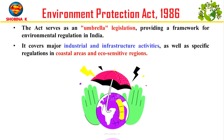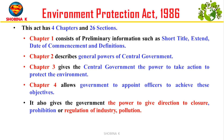It covers everything from big industries to coastal areas and places sensitive to the environment. The act has four chapters and 26 sections. Chapter one covers introductory information like the act's title, extent, commencement date, and definitions. Chapter two outlines the general powers of the central government. Chapter three empowers the central government to take actions to protect the environment. Chapter four allows the government to appoint officers to enforce these objectives, including the power to direct the closure, prohibition, or regulation of industry and pollution.